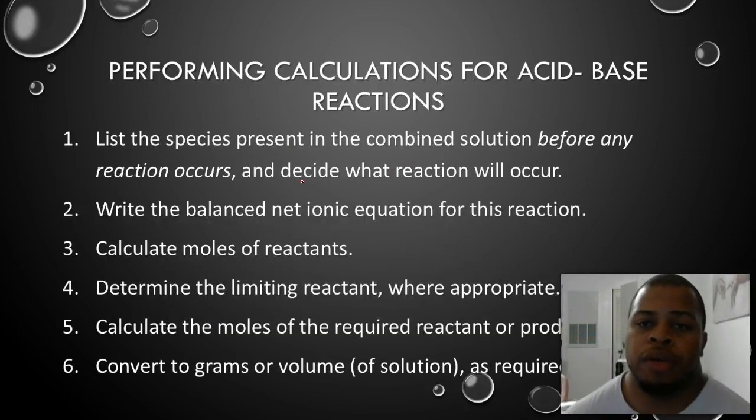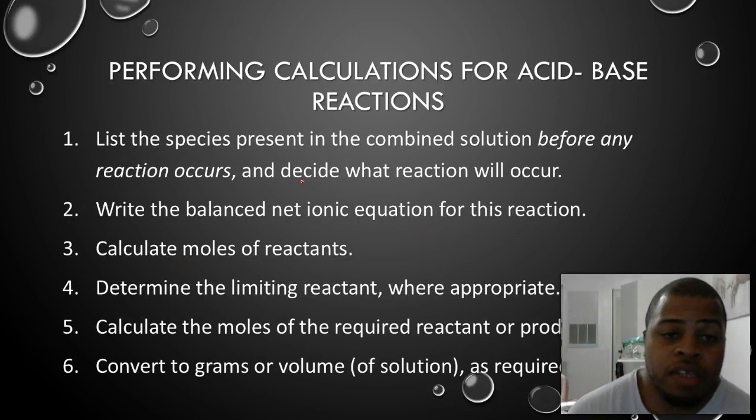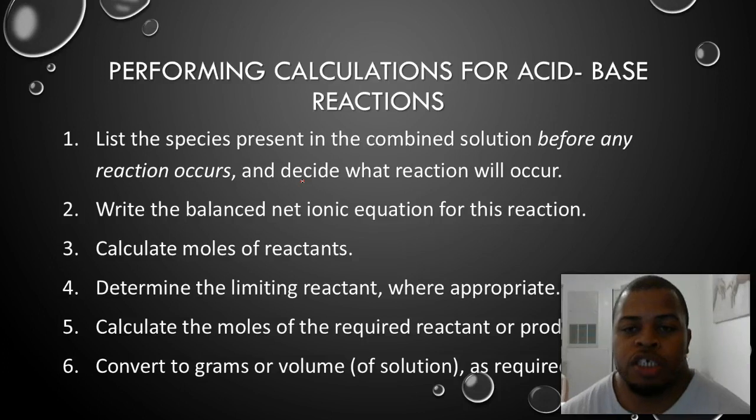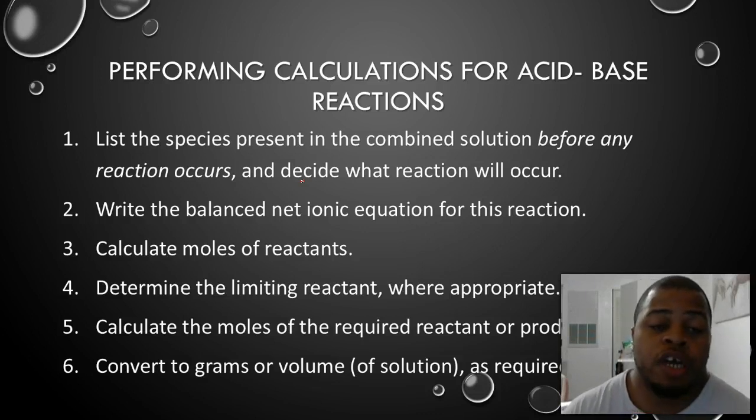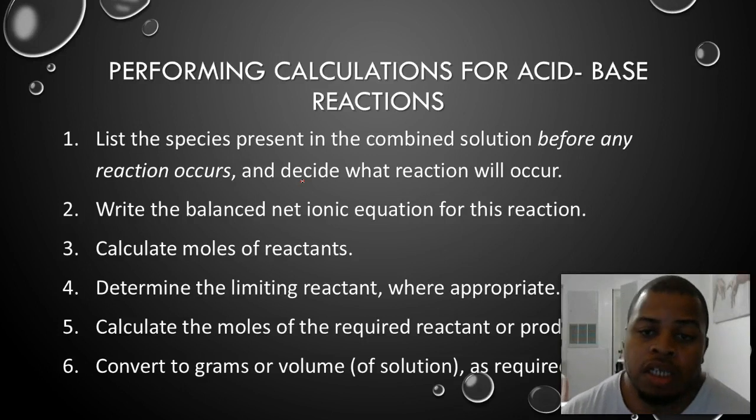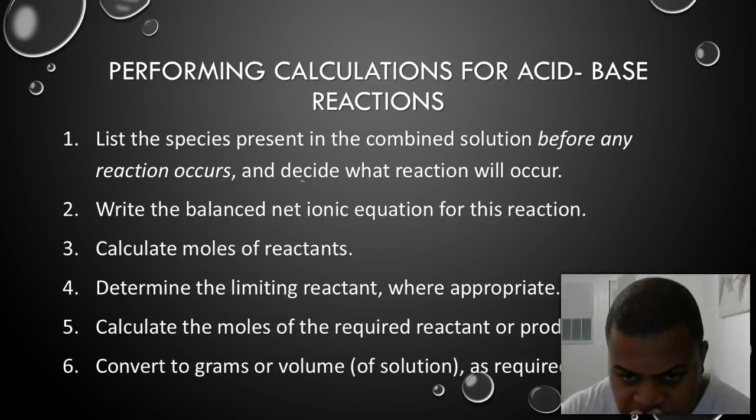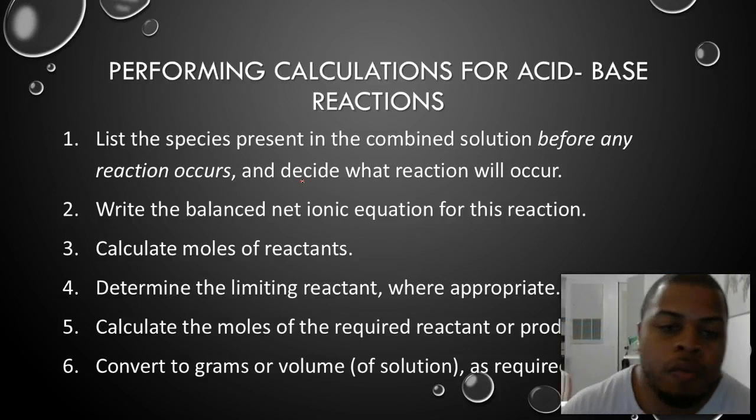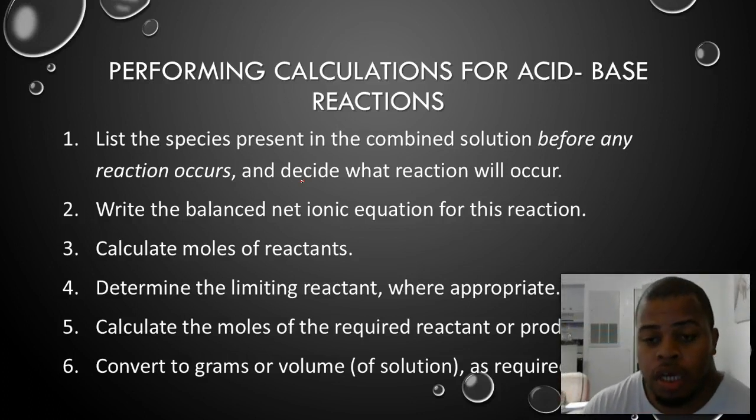Now, when we're dealing with performing calculations for acid-base reactions, we have to do a couple of things. First thing we need to do is go ahead and list the species present in the combined solution. This will give us an idea of if a reaction will occur at all, and if so, what it will actually be. Once we've determined what the reaction will be, then we need to write the balanced net ionic equation for the reaction. We can use this information to calculate the mole of the reactant, determine the limiting reactant, and then calculate the moles of reactant or product. But, if we're continuing on from this point, we'll then have to look at the grams or the volume of the solution that is required. This is going to be very, very important as we talk about titrations and neutralization reactions.